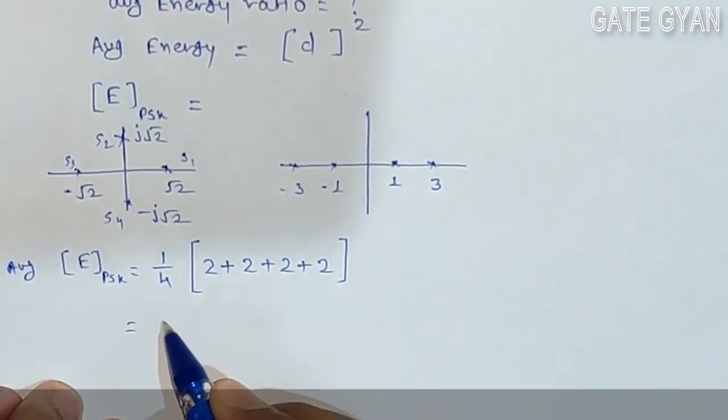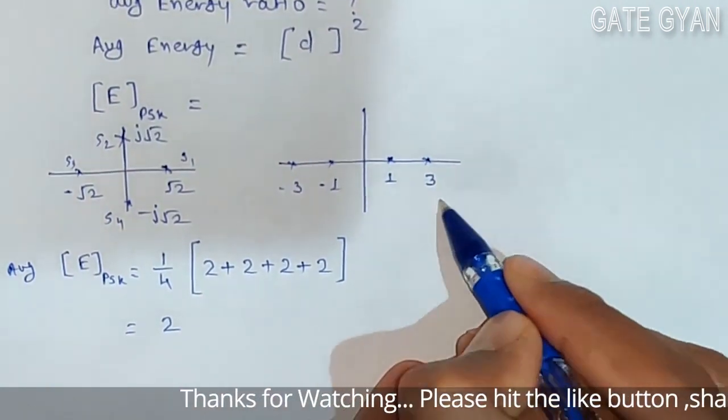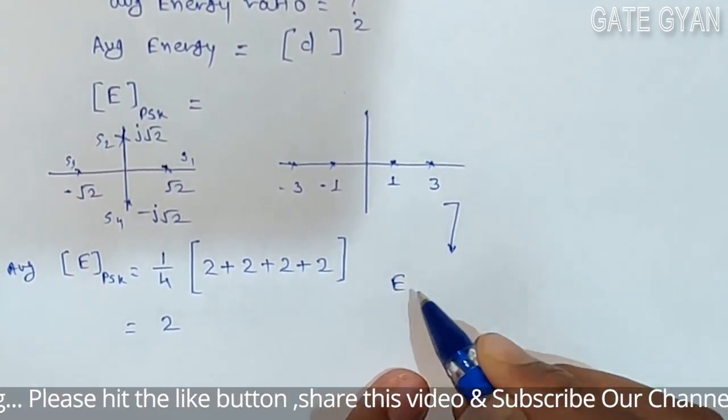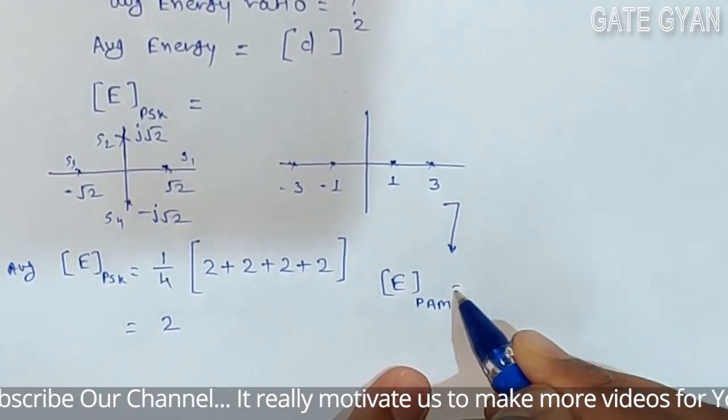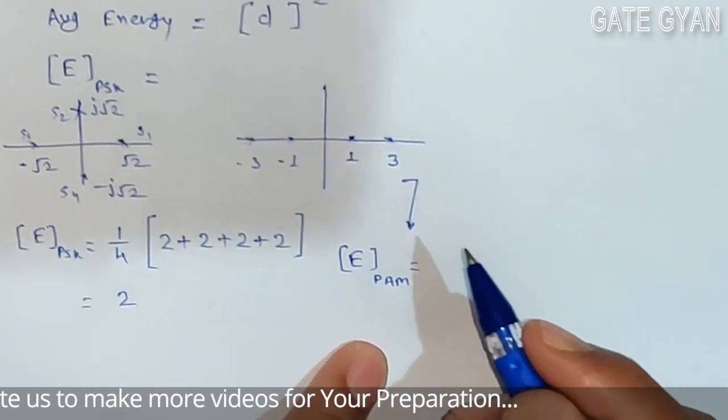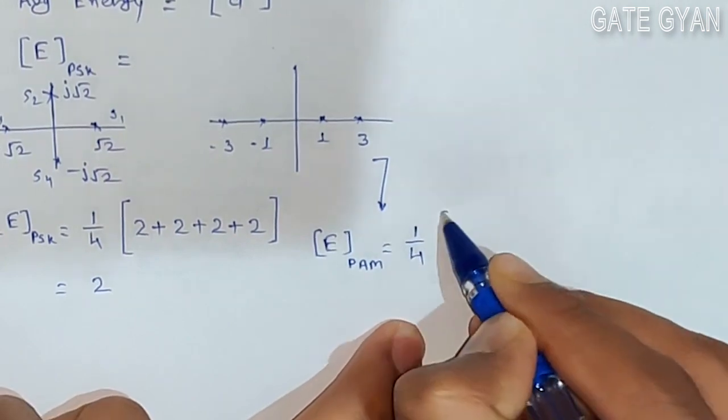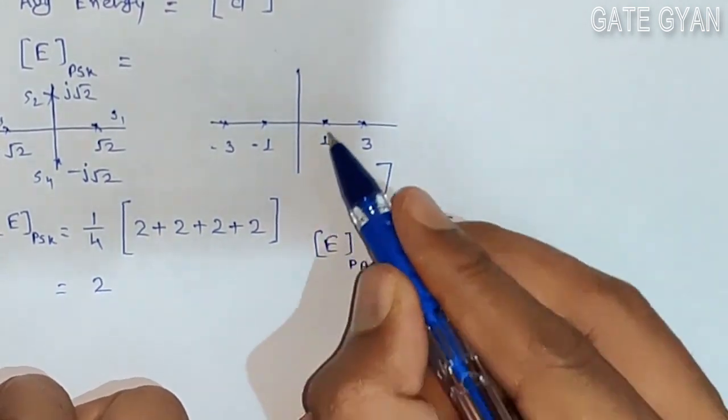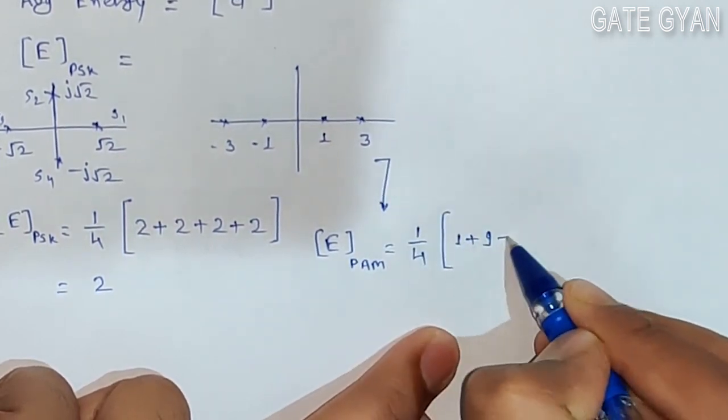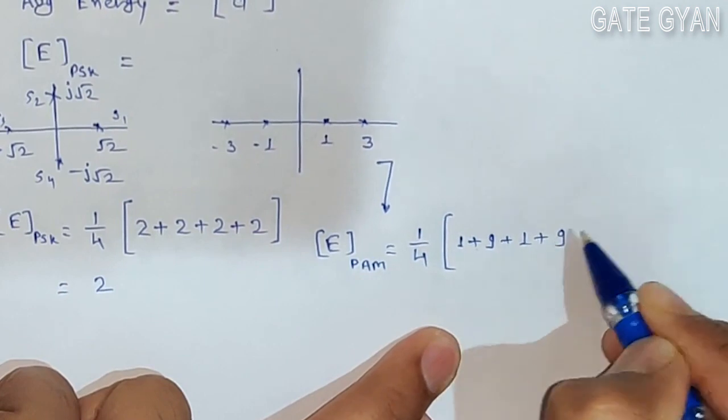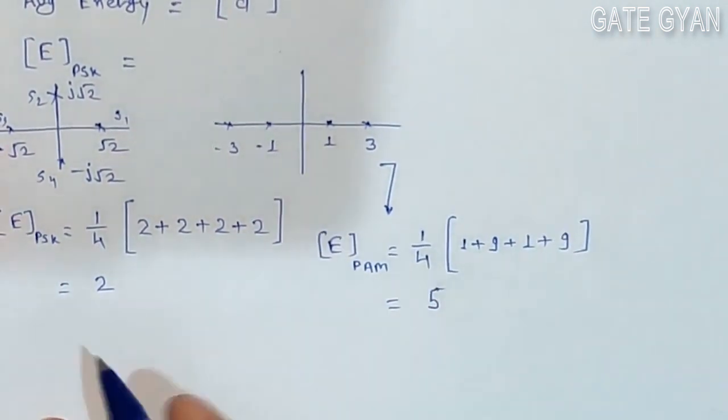Similarly, for PAM, if you see the average energy for PAM, it will be 1/4 times the distance. It is 1 squared so 1, plus 3 squared which is 9, plus 1, plus 9. From here if you calculate, it is 5.